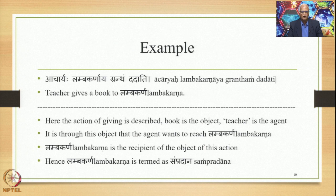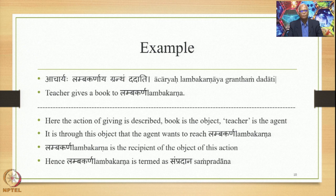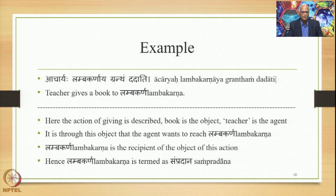For example: Acharyaha Lambakarnaya Grantham Dadati — a teacher gives a book to Lambakarna. Here the action of giving is described by the verbal form Dadati. Book is the object and teacher is the agent. It is through this object — namely the book — that the agent, namely the teacher, wants to reach Lambakarna. Therefore Lambakarna is the recipient of the object of this action, and hence Lambakarna is termed Sampradana. Notably, Lambakarna is itself an example of a Bahuvrihi Samasa.